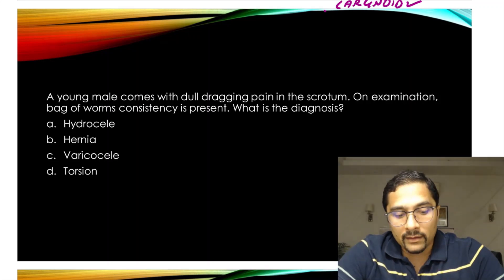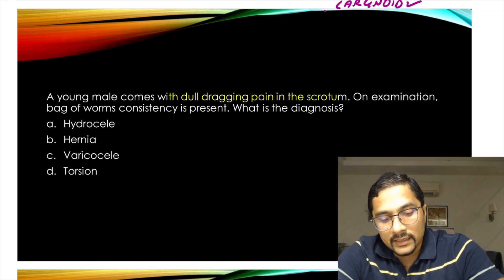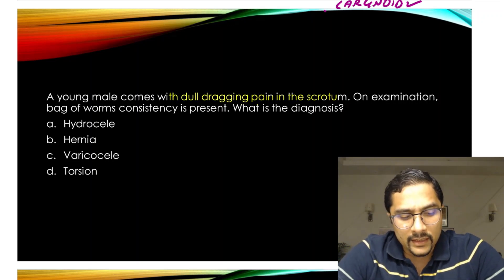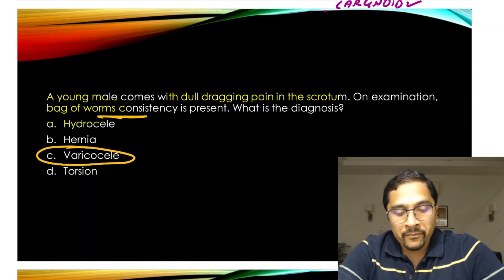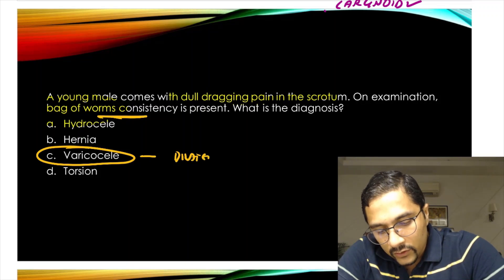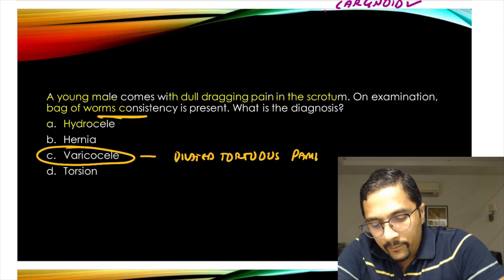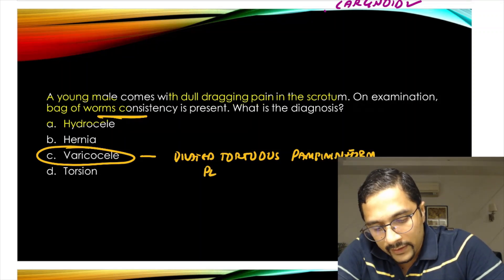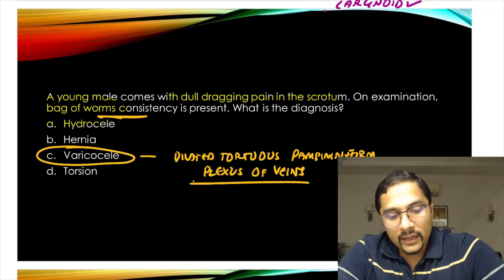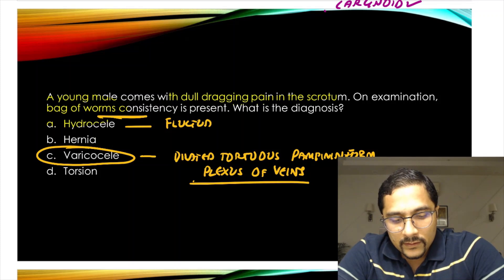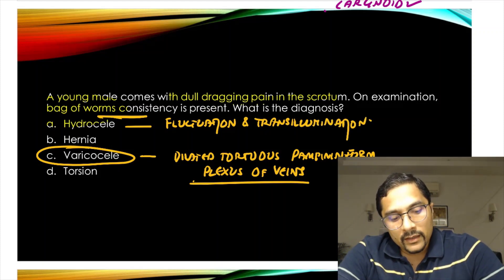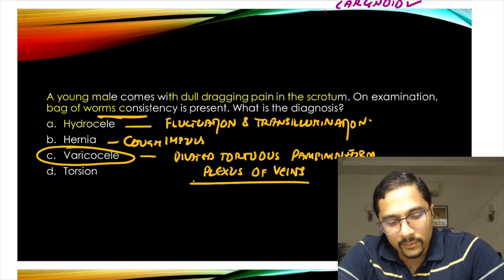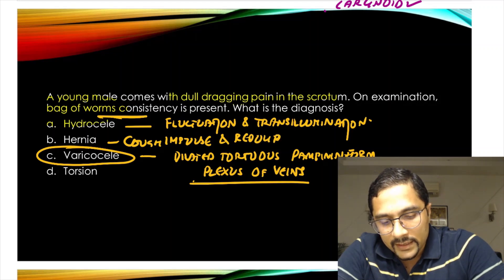Moving on to urology. A young male comes with dull dragging pain in the scrotum and a bag-of-worms consistency — this is seen in a patient with varicocele. Varicocele is dilated tortuous pampiniform plexus of veins. Hydrocele shows fluctuation and transillumination. In hernia, you see a cough impulse and reducibility.